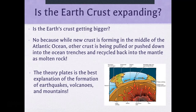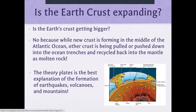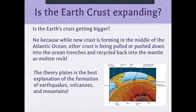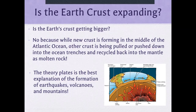Is the Earth's crust getting bigger? No — because while new crust is forming in the middle of the Atlantic Ocean, other crust is being pulled or pushed down into ocean trenches and cycled back into the mantle as molten rock. This is the rock cycle. The theory of plate tectonics is the best explanation we have for the formation of earthquakes, volcanoes, and mountains — and while there's still a lot to be learned, it is the best theory we have.